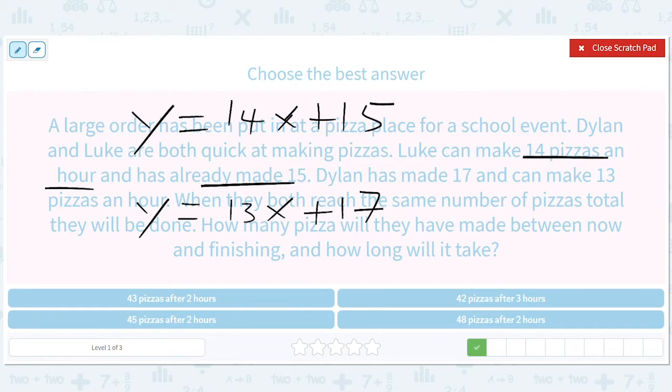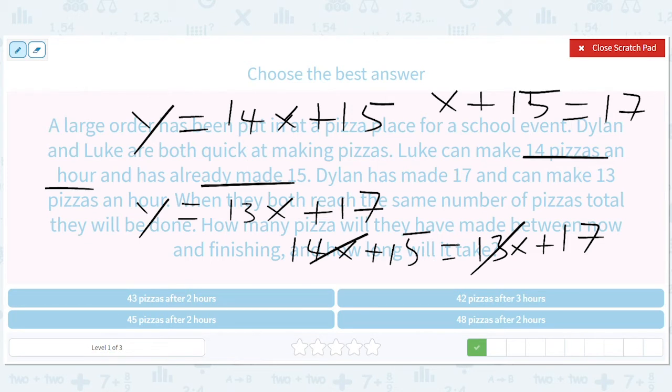When they both reach the same number of pizzas, they will be done. So when is that? How many will they have made? Basically, they're always going to be asking what's the X, what's the Y when you set them equal to each other. So when we set these equal to each other, we're going to get 14X plus 15 equals 13X plus 17. Subtract minus 13X. That'll give us X plus 15 equals 17. Subtract 15 from both sides. You get X equals 2.